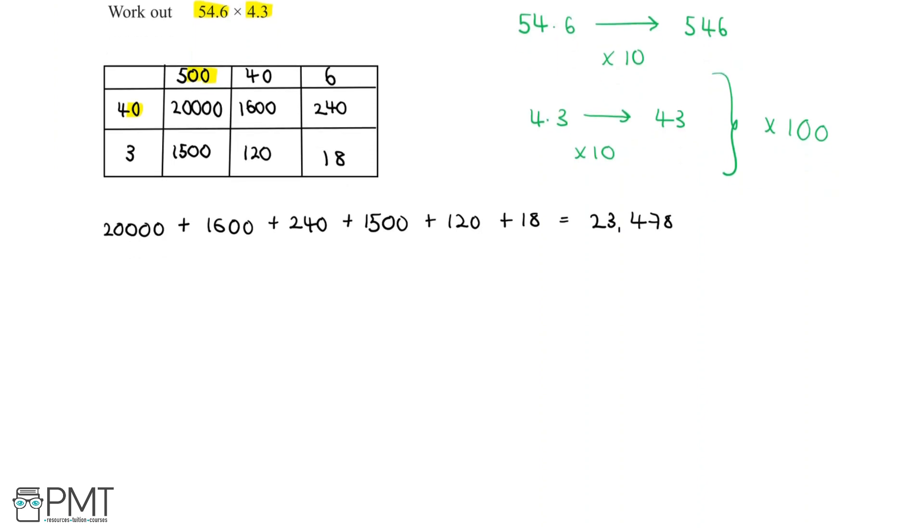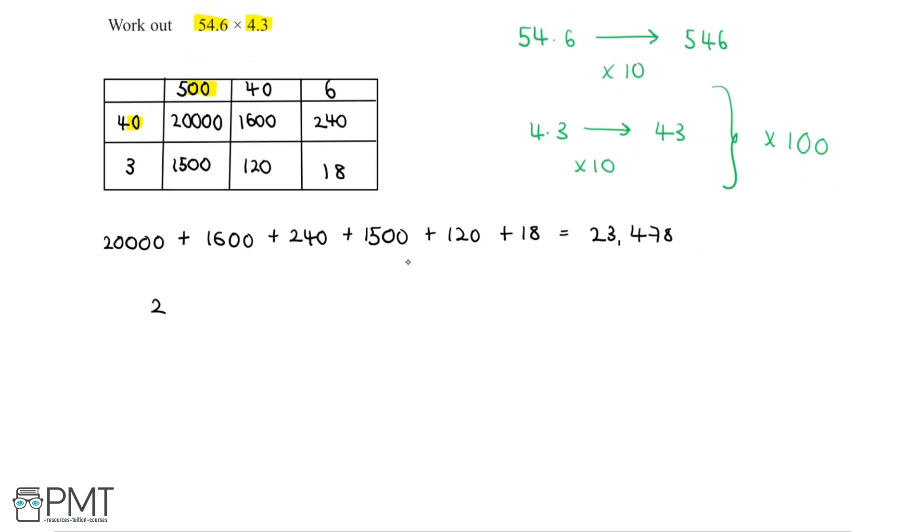Now we can use place value to look at this. We have 23,478, but we need to divide by 100 in order to get the answer for 54.6 multiplied by 4.3. The decimal point, for any normal number, stays at the very end. But because we're dividing by 100, we want to move it back not just one place, but two places. And the decimal point will end up right here.